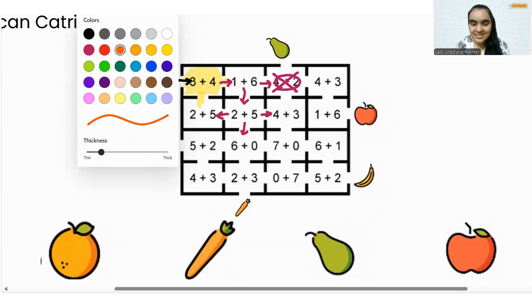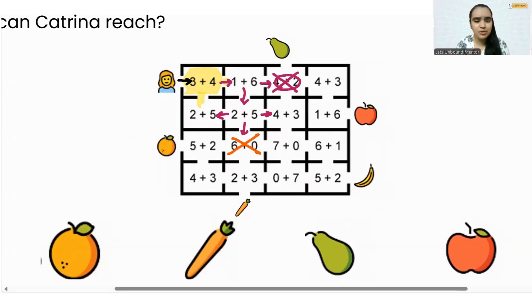6 plus 0 is 6, right? That means we cannot go into this room, but we can go in this room and even this room. But students, if we will go here, there is no other way of going down, correct? Catrina will go up and she will go out again somewhere she came, but we will not do that, right? That means we can go over here as well.